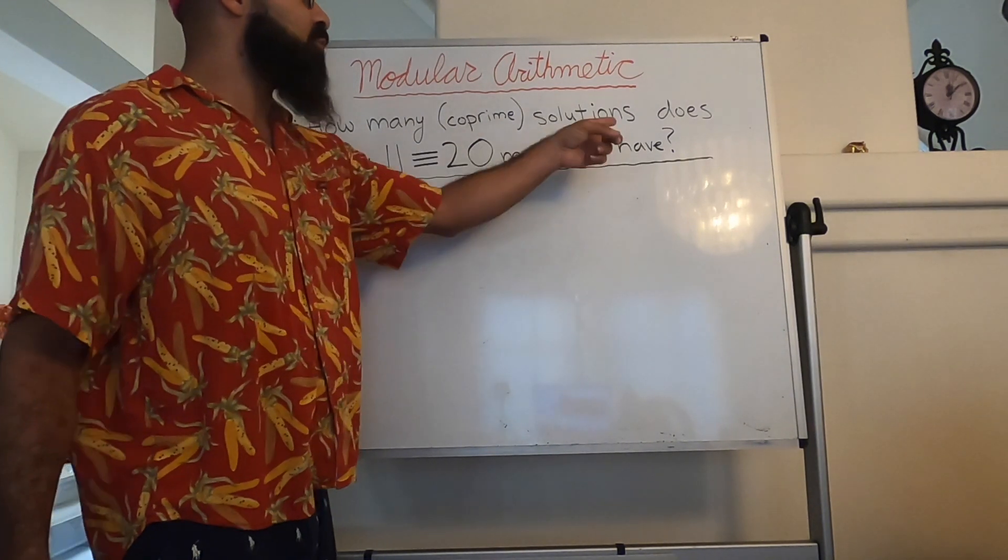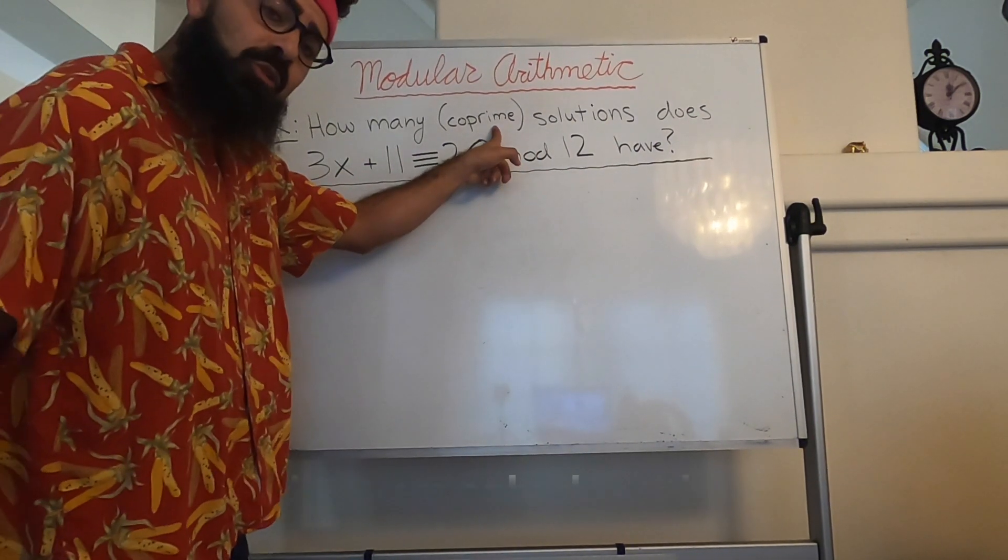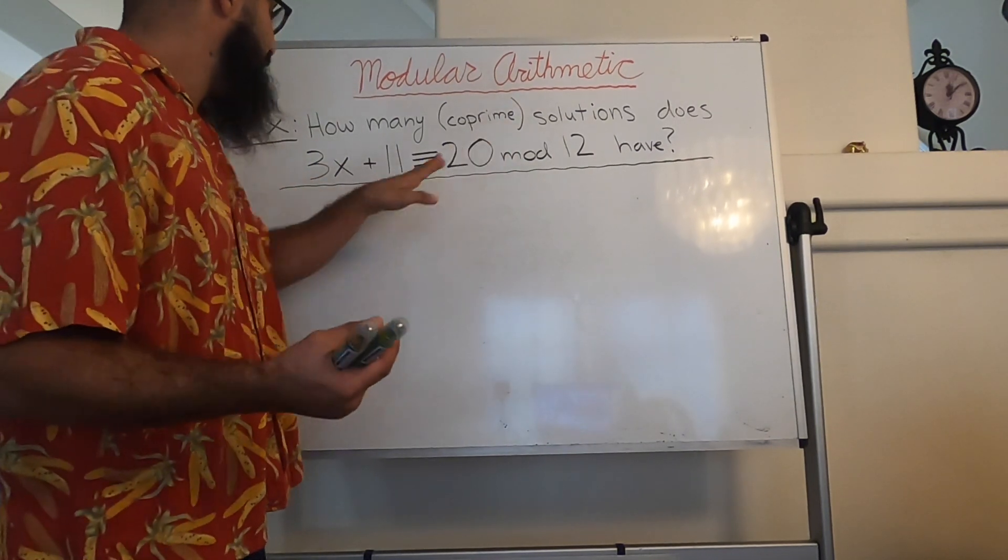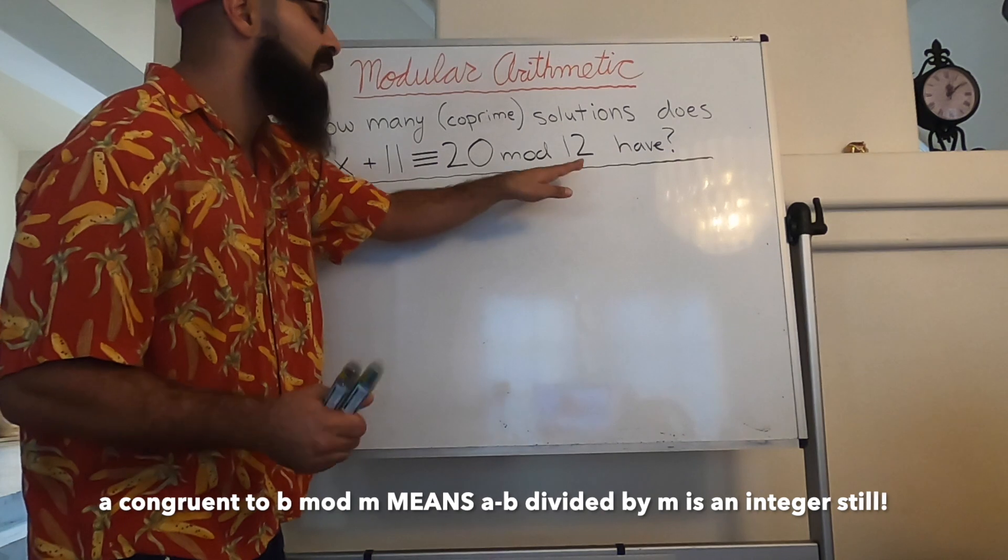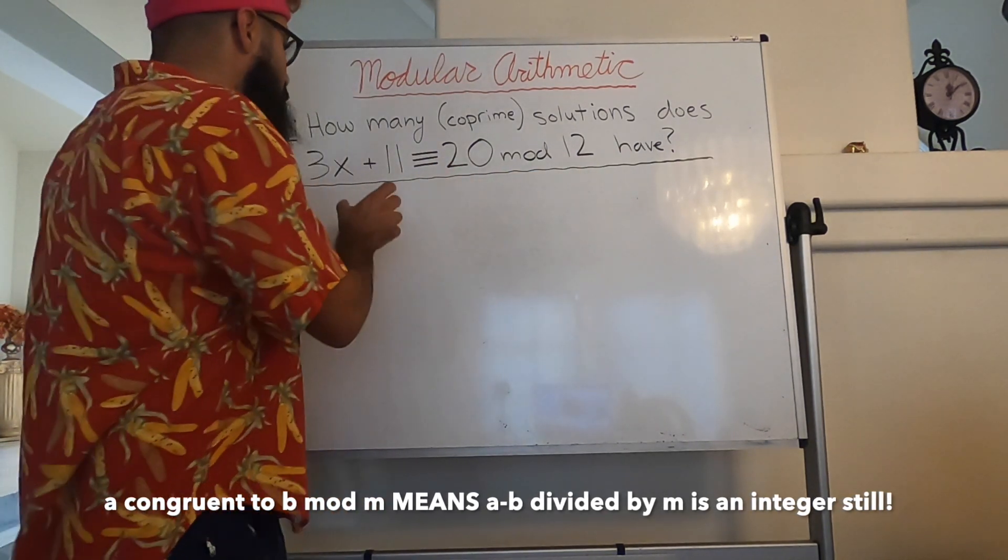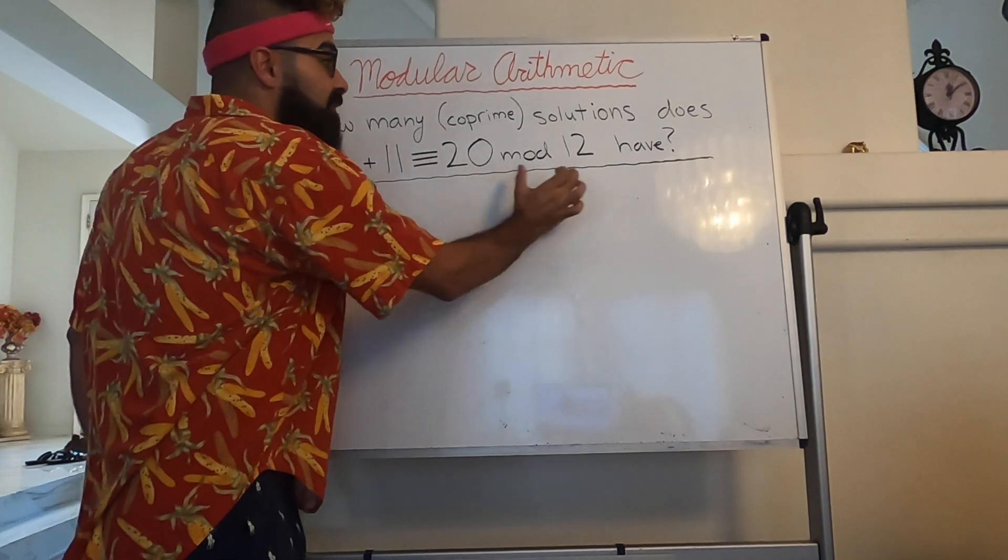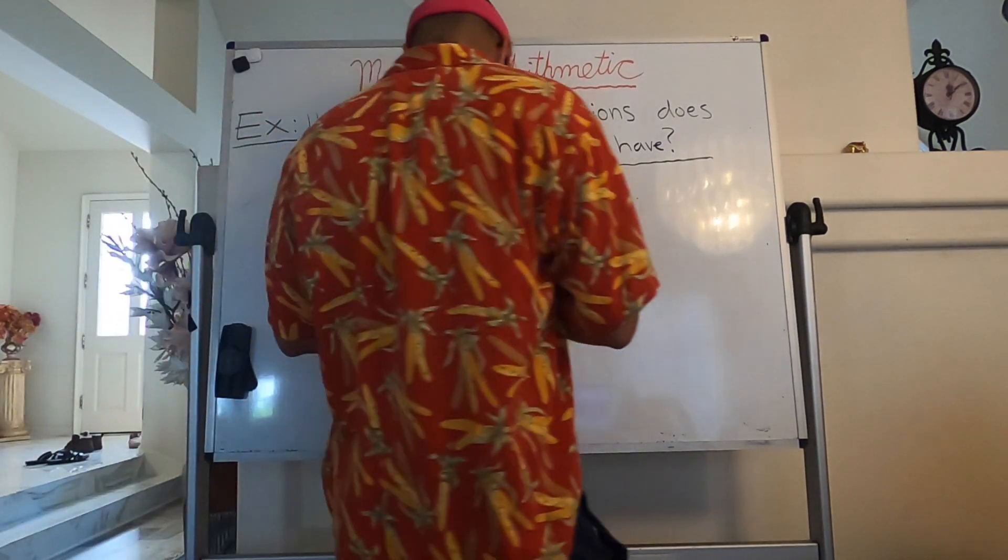Example: how many co-prime solutions does the following equation here have? Co-prime solutions are solutions that only share the number 1 in common as a factor. And 3x plus 1 congruent to 20 mod 12 is a fancy way for saying, when is 3x plus 1 minus 20 divided by 12 still an integer? We're about to find this out.